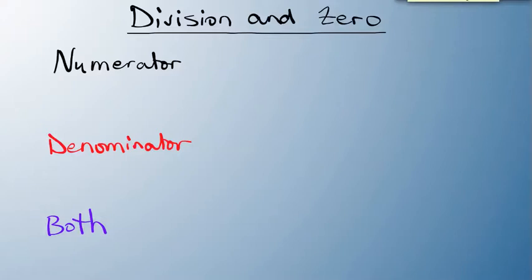Let's take a look at division of functions and how zero is effective. Now, if my numerator happens to equal zero, then the whole function is zero.